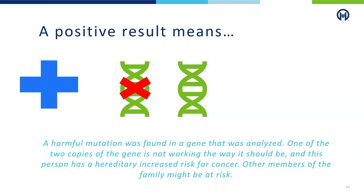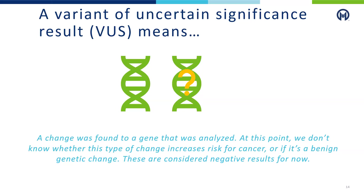In the case of a positive result, your genetic counselor will review what next steps might be recommended and how this information may affect your care. With a positive result, other family members may be at risk and may benefit from getting testing done themselves. A variant of uncertain significance, or VUS, means a change has been identified, but at this point we do not know whether this type of change increases risk for cancer or if it is a benign genetic change. Because most VUS results are eventually reclassified as benign, we treat this kind of result the same as a negative or normal result and do not change screening or treatment recommendations.